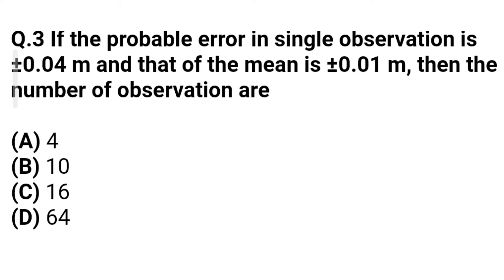Question 3: If the probable error in a single observation is ±0.04 m and that of the mean is ±0.01 m, then the number of observations is — Option A: 4, Option B: 10, Option C: 16, Option D: 64. The correct answer is Option C — 16.